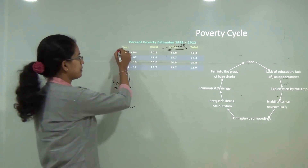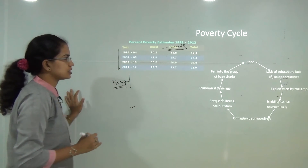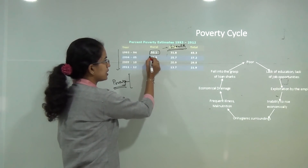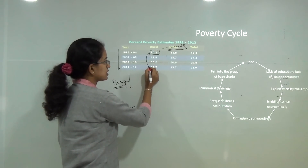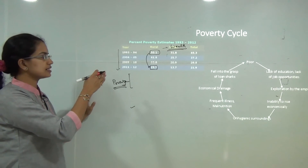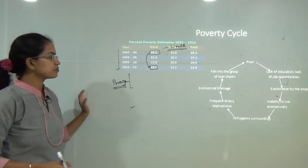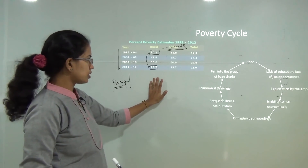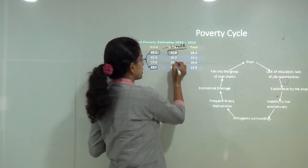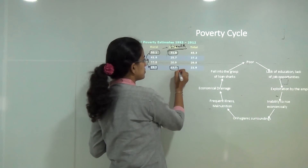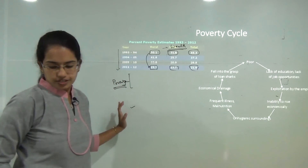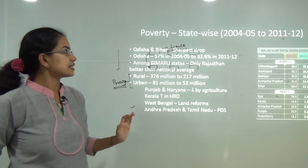Comparing 1993 to 2012, poverty in rural areas has decreased by nearly 50% — from 50% in 1993 to nearly 25% in 2011. There has also been a significant drop in urban and total population poverty. So poverty is definitely declining in India.